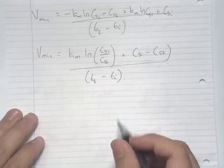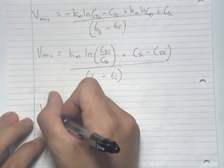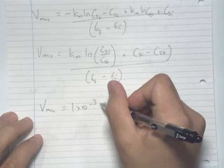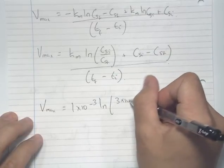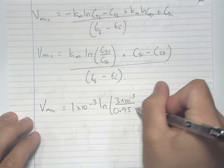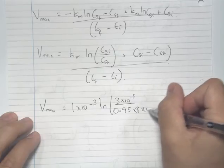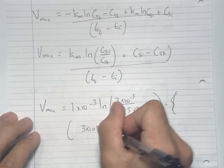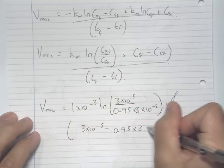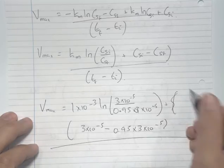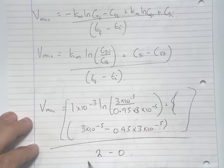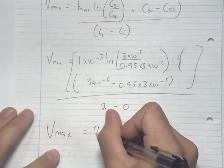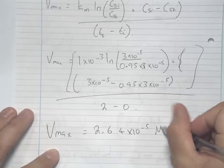Plugging in the numbers from the question: Vmax equals Km (1×10⁻³) times ln of the concentration ratio, plus 3×10⁻⁵ minus 0.95 times 3×10⁻⁵, all divided by (2 minus 0) minutes. This gives Vmax equal to 2.64×10⁻⁵ molar per minute.